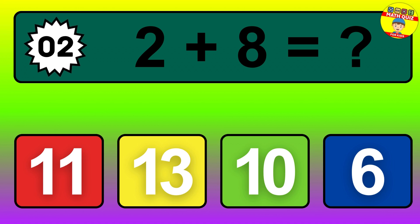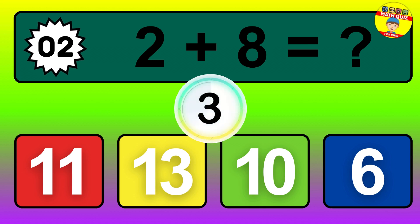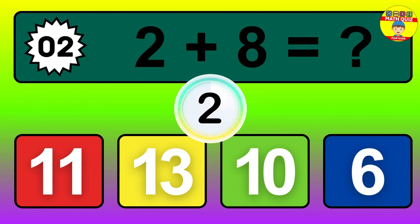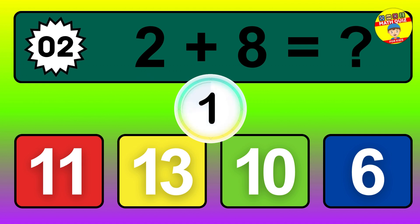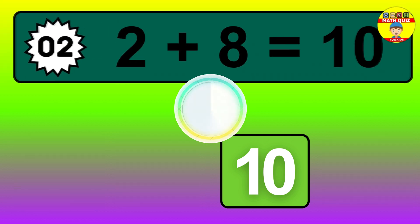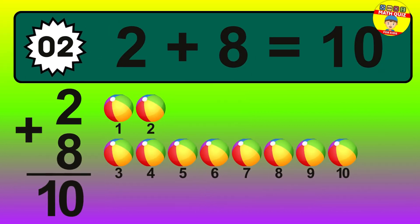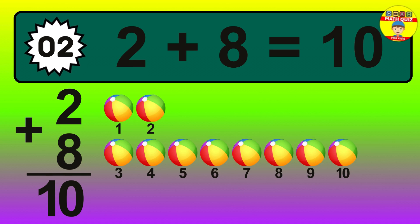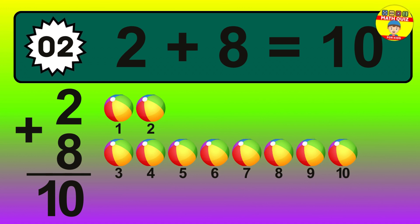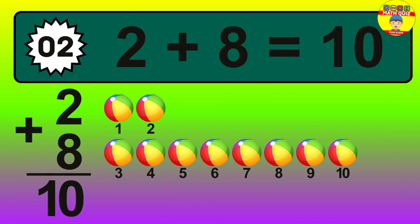Question 2. 2 plus 8 equals what? So the answer is 2 plus 8 is 10. Let's count it. 1, 2, 3, 4, 5, 6, 7, 8, 9, 10.